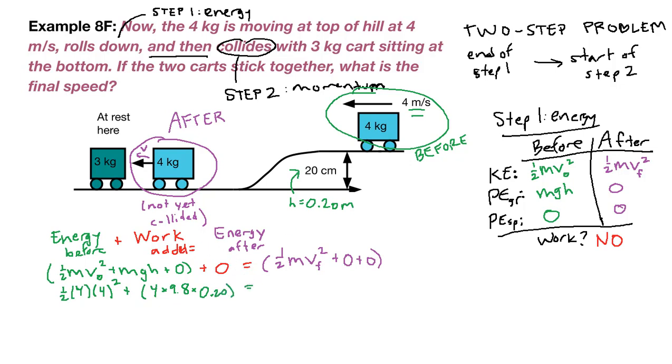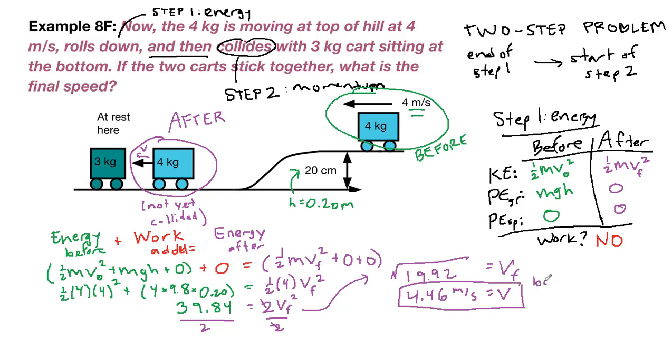The height is 0.20 meters. On the right side, we have 1 half times 4 times v final squared, which is 2v final squared. On the left, I'm going to put all of this into my calculator and get 39.84 joules. Divide both sides by 2, then take the square root. So the square root of 19.92 is our v final, and we get 4.46 meters per second. That is at the bottom of the hill right before the collision. That is the end of our step 1, but it's the start of our step 2.